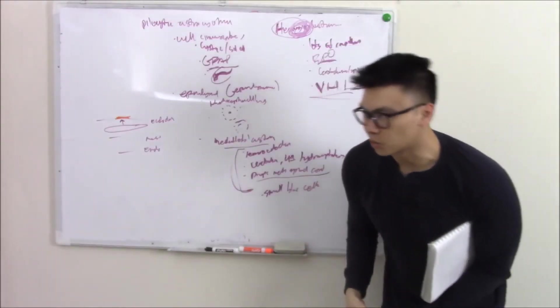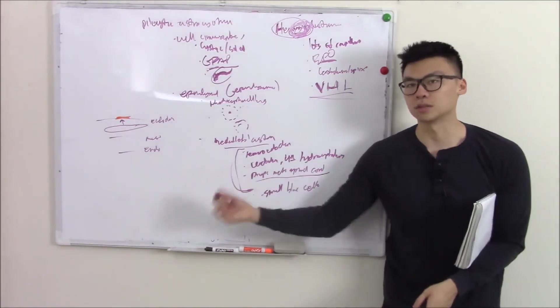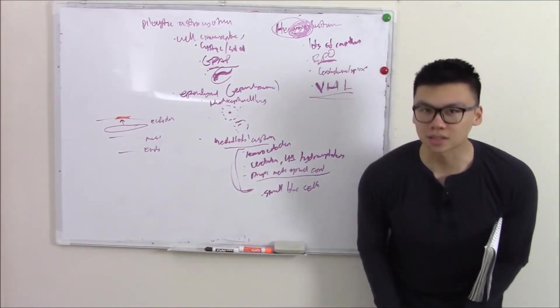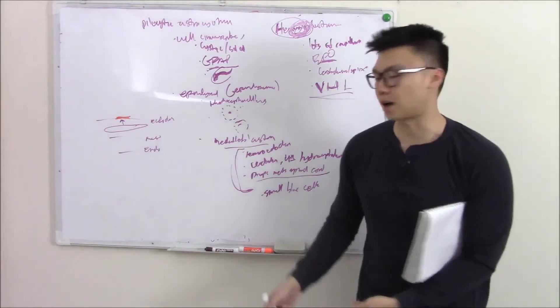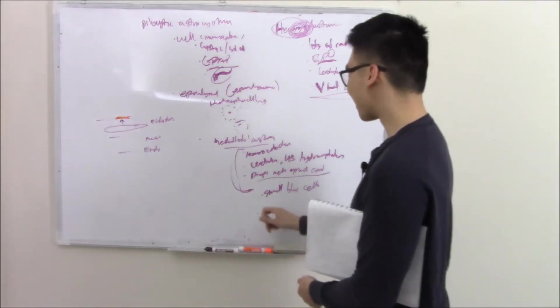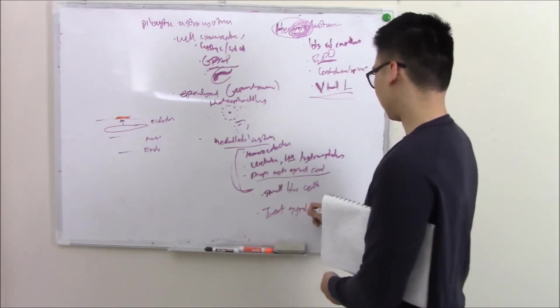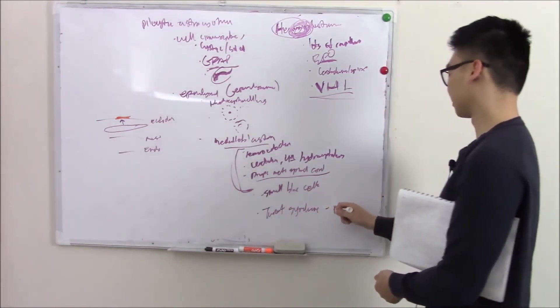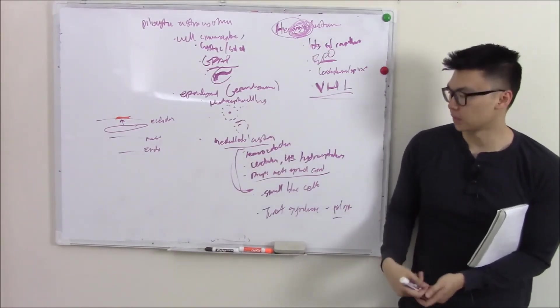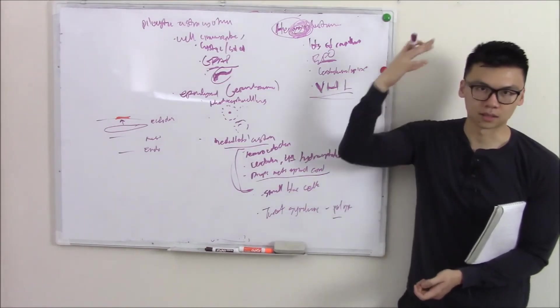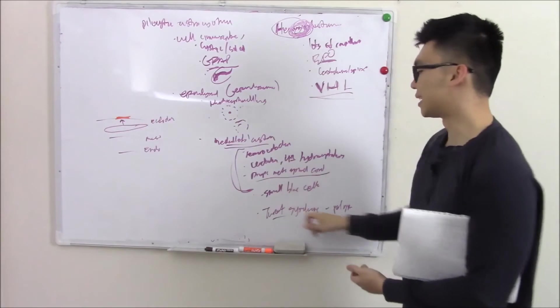Now medulloblastoma, if you recall all the way back from our GI block, it's associated with something. Do you remember what it's associated with? It's associated with colonic polyps. We call that Turcot syndrome. Do you remember that now? Turcot syndrome. It's all coming back to us. That was polyps. So a patient has rectal bleeding, headaches. You do a colonoscopy because you have a ton of polyps. And they might ask, what's the cause of the headache or whatever? Medulloblastoma. The person that has Turcot syndrome.